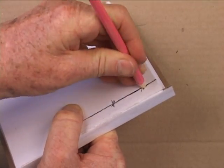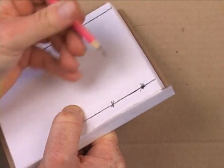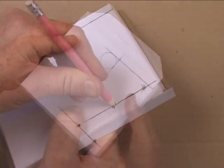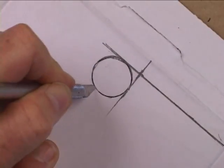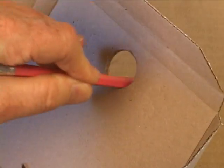Punch holes through each X with a sharp pencil. Unfold the box and cut out the circular hole for the motor with an X-Acto knife. If necessary, enlarge the hole slightly with a pencil to better fit the motor.